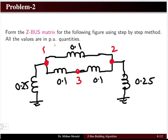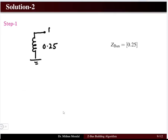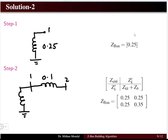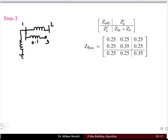The second problem gives a figure with elements in per unit quantities and asks us to obtain the Z-bus. There are three buses and one reference bus. In step 1, a new bus 1 is added to the reference bus with one row and one column. In step 2, a new bus is added to the existing bus with element j0.1, so the new element is j0.25 + j0.1 = j0.35.